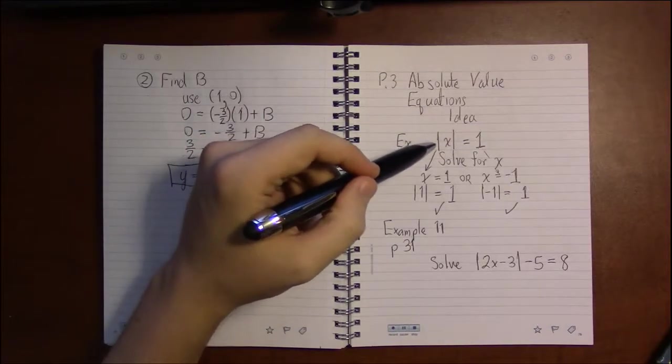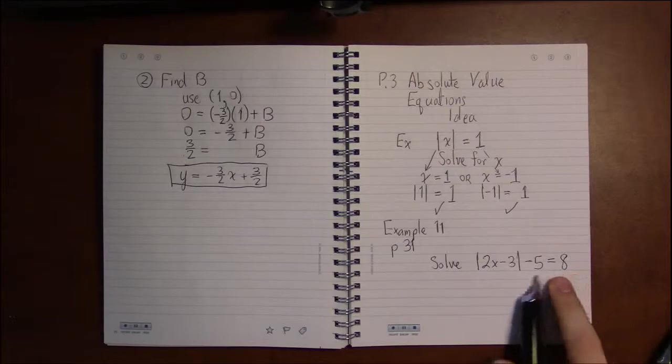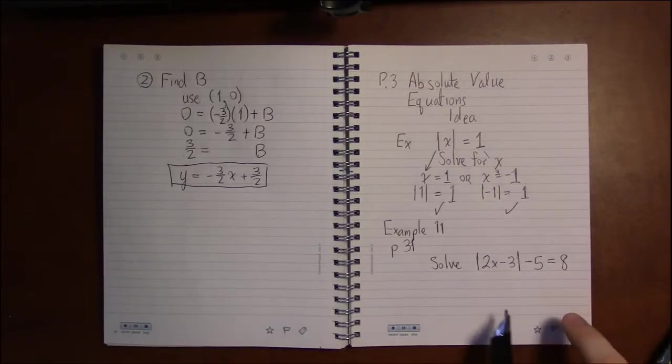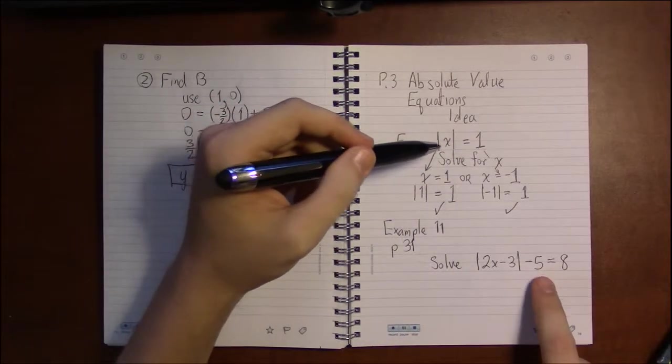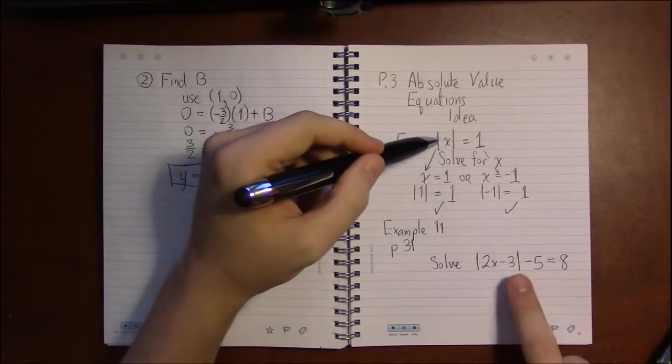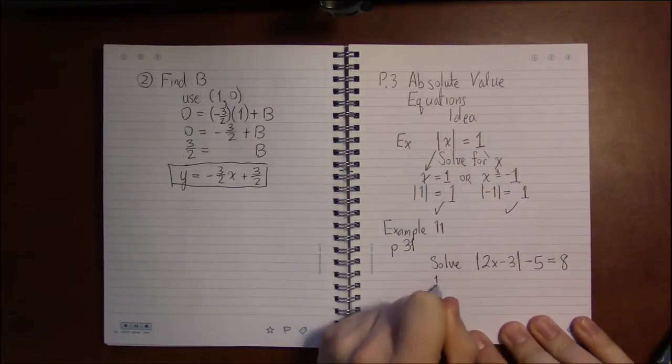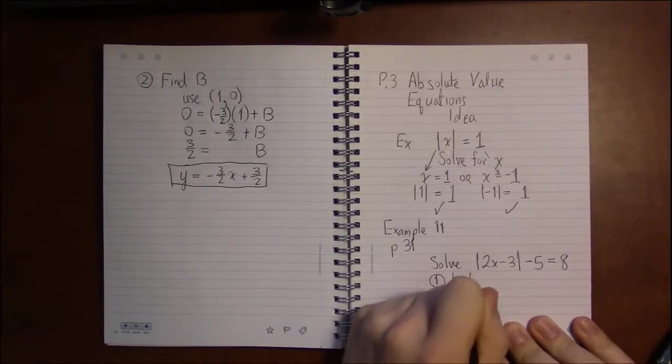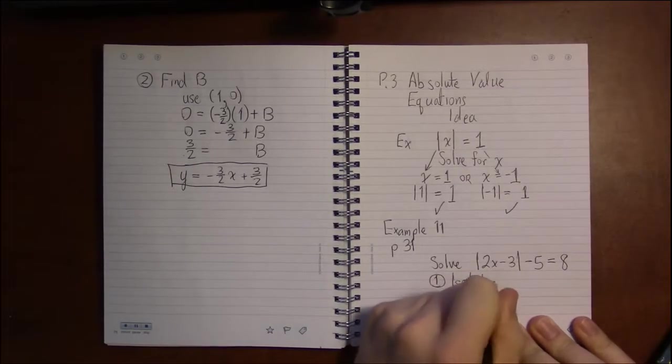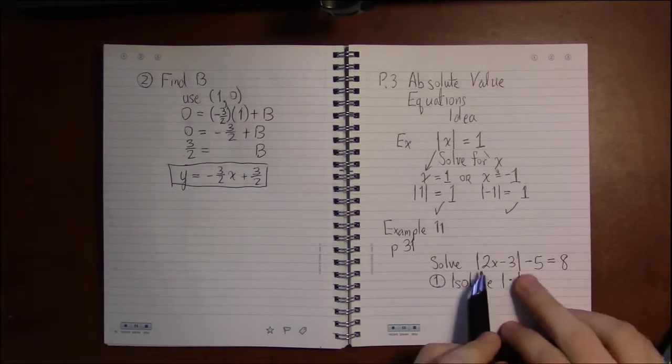Now it isn't as simple as this. I can't just say, okay, everything over here equals 8 and everything over here equals negative 8. Solve those two and be done with it. Because the negative 5 isn't inside the absolute value. What you have to do is isolate the absolute value—or in other words, get everything between these two vertical bars by itself.